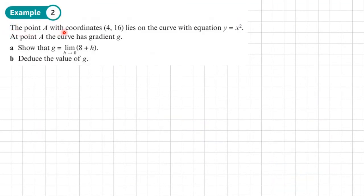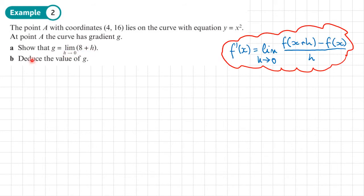Example 2: The point A with coordinates (4, 16) lies on a curve with equation y equals x squared. At point A, the curve has gradient G. Part A shows that G equals the limit as H tends to zero of eight plus H. Any question that asks you to differentiate from first principles uses this formula, which is also in the formula book. So what this question is saying is: at X coordinate 4, which gives Y coordinate 16, what's the gradient? And it uses G instead of F dash of X.